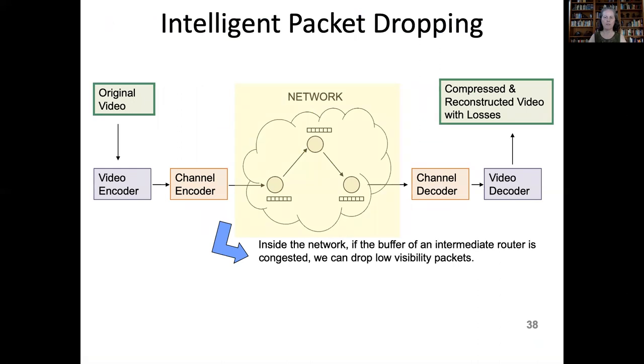Here's an example of a simple linear diagram. If I were presenting this, I would just go in order. We start with an original video, and that passes through the video encoder, which compresses it. Next, it goes through the channel encoder, which adds redundancy. Then it goes through the network, where nodes may be congested and some packets have to get dropped. At the receiver side, it first goes through the channel decoder, which attempts to correct bit errors. Then the video decoder, which decompresses it. And finally, we end up with the compressed and reconstructed video with losses.